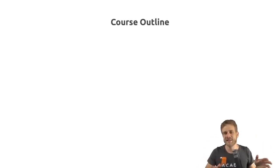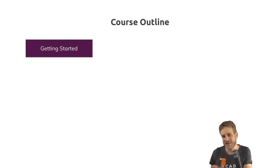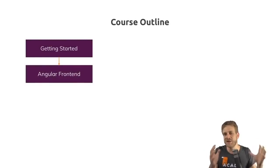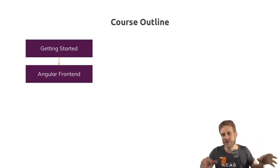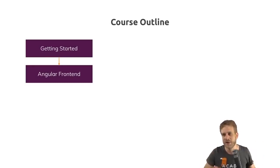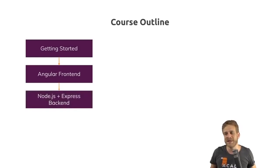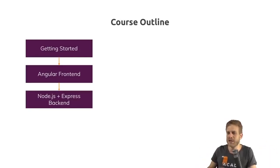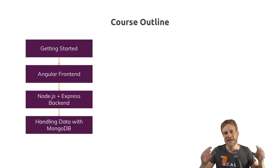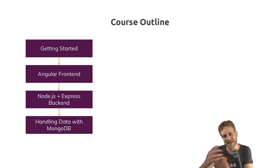Now that we know what the MEAN stack is and have our basic project set up, let's see what's inside this course. In the next module, we'll dive into building the Angular frontend — you'll get an Angular refresher there too. Thereafter, we'll attach the Node Express backend. Then we'll add MongoDB to the party — a really great database — and show you how to work with it from Node Express and therefore also from Angular.